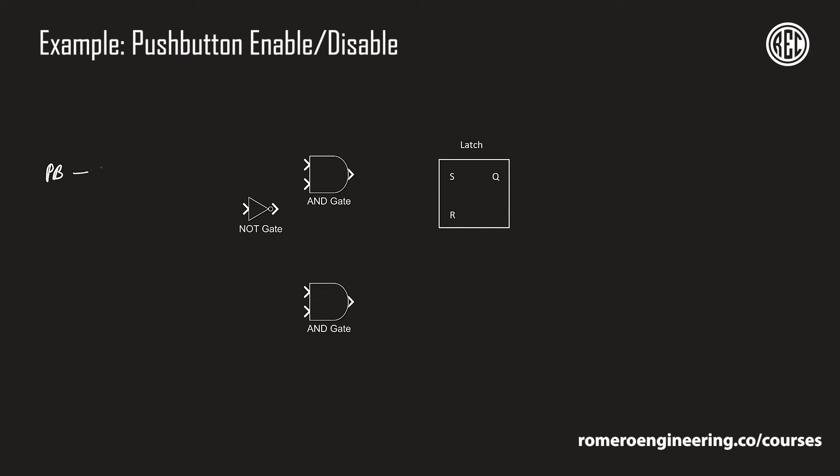We want to add a rising edge trigger so that whenever we push the button, the output is a pulse — essentially telling us that we pressed the button. It only goes high when we press it, not when we release it. This is important, and we covered how rising edge triggers work in the previous lecture.